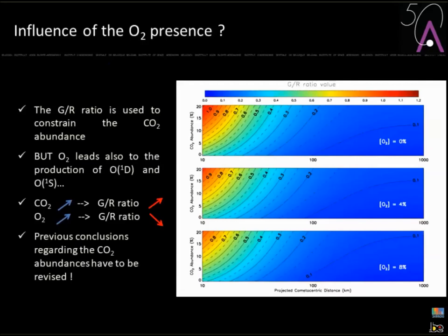If you increase the abundance of CO2, the green-to-red ratio increases. But O2 has exactly the opposite effect — the green-to-red ratio decreases when O2 is added. This is related to the nature of the cross sections for producing O(1S) and O(1D). So we must be very careful when trying to assess CO2 abundances based only on the green-to-red ratio, because this is no longer valid once O2 is present.